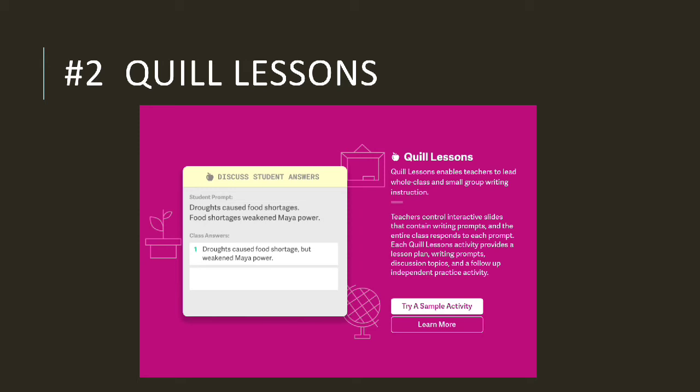Each slide contains a step-by-step guide to help the teacher introduce grammar concepts. The step-by-step guide also includes suggestions on how to discuss students' answers and how to model strong writing skills to the students. Then, discuss student answers — to see the student answers in real time and facilitate a conversation by selecting both strong and weak answers to project to the class, so students can discuss why certain sentences are stronger than others. The teacher can also click on the flag button to select students who may need extra support, and at the end of the lesson, pull aside the flagged students for a small group instruction.